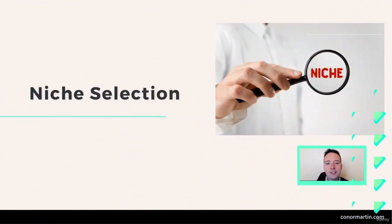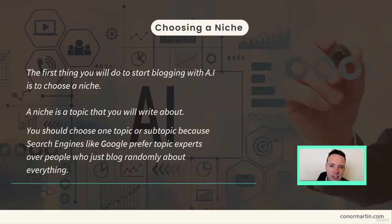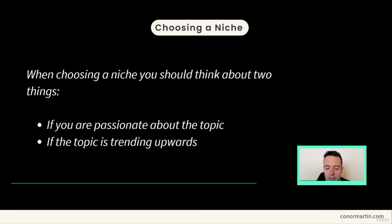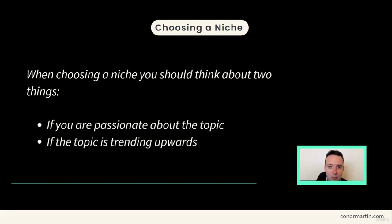The first thing you should do when you start a website is to choose a niche. A niche is a topic that you write about. You should choose one niche because search engines like Google prefer people to be experts on topics — you shouldn't just write about every topic you can think of, it should be focused on one topic. When choosing your niche, you should think about whether you are passionate about the topic, because if you're passionate you will want to create more and more content and you won't get bored.